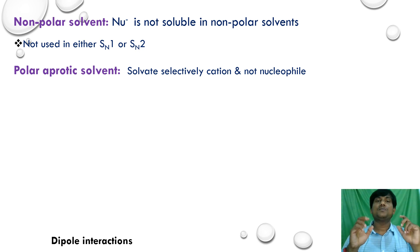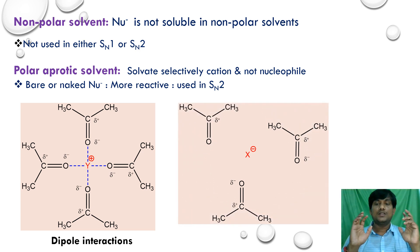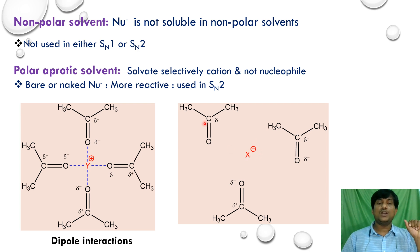In polar aprotic solvents, the nucleophile will not be solvated. The cation Y+ is surrounded by polar aprotic solvent molecules — here acetone is used as an example — through dipolar interactions between the positively charged cation and the solvent. However, for the nucleophile X−, there is no interaction between the solvent molecules and X−.